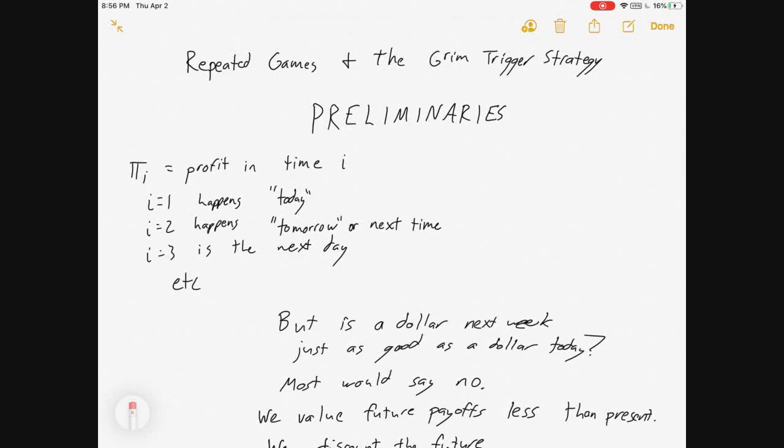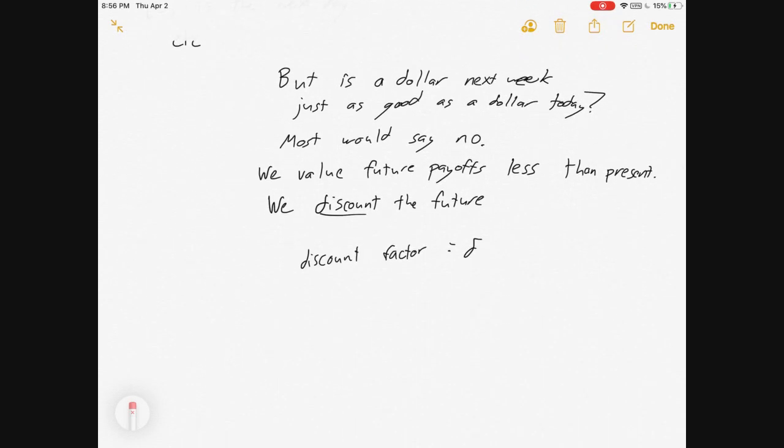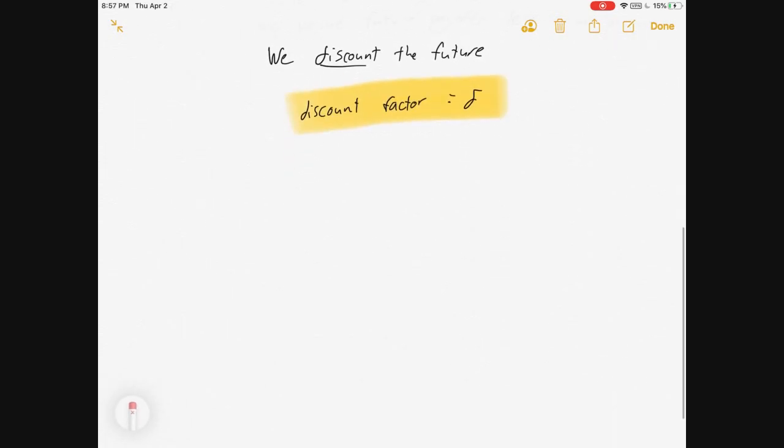Hey everybody, welcome to part two of my Grim Trigger Strategy and Collusion Series. In part one, we laid out preliminaries: multiple time periods, discount factors, the way we put less value on future profits than present profits.